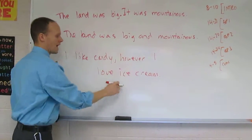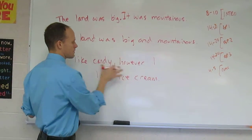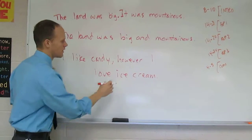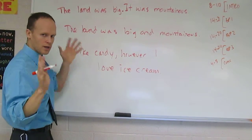So I like candy, however, I like ice cream. This is inaccurate. Again, this is a comma splice because I have two complete sentences right here. However, I love ice cream. I like candy. Two separate independent clauses.